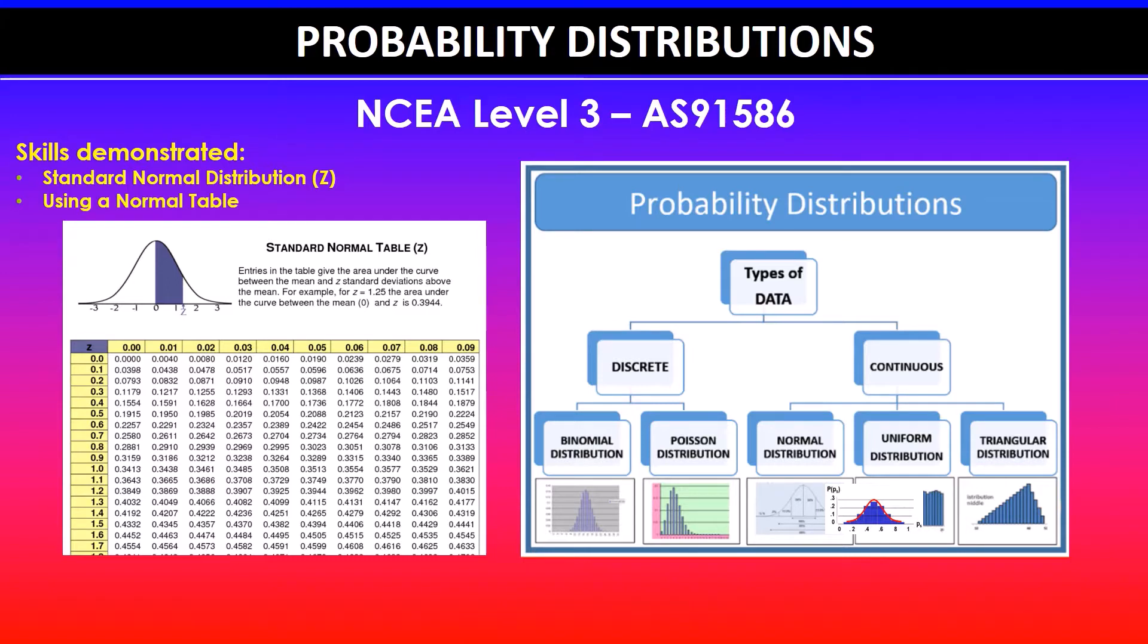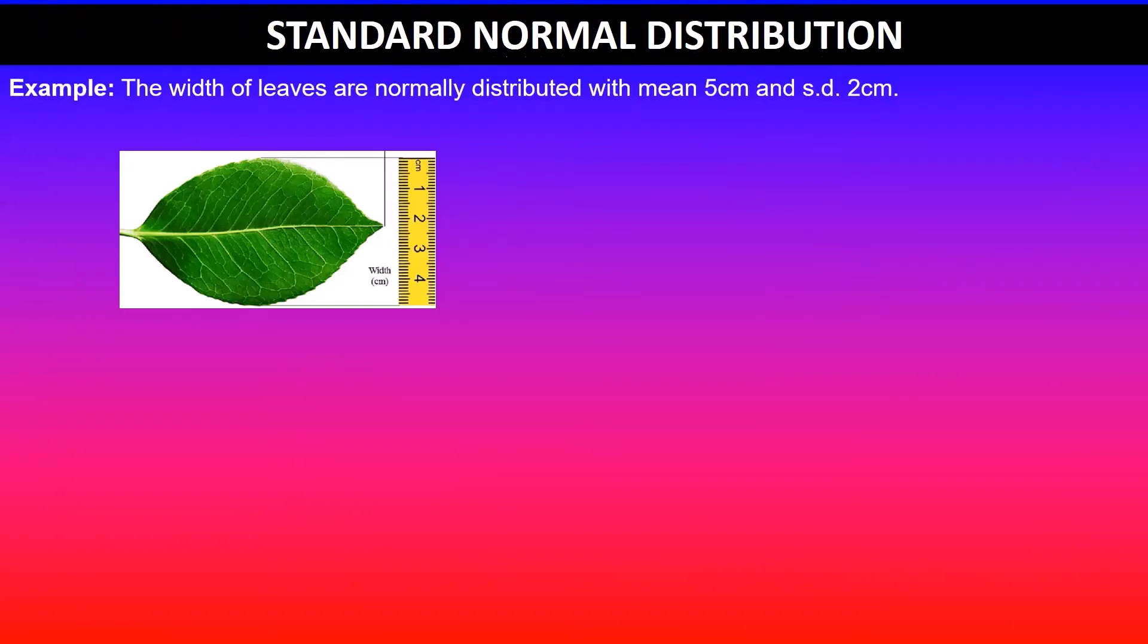You don't need to use normal tables if you have a graphics calculator. In this question, the width of leaves are normally distributed with mean 5cm and standard deviation 2cm. The question asks: what is the probability that the width of a leaf will exceed 6cm?